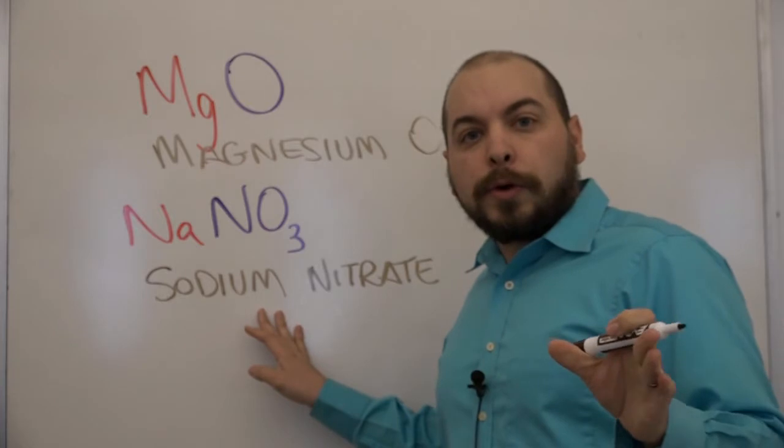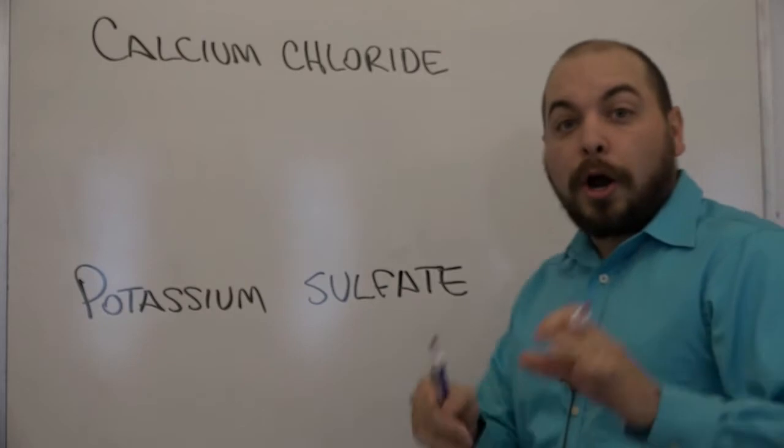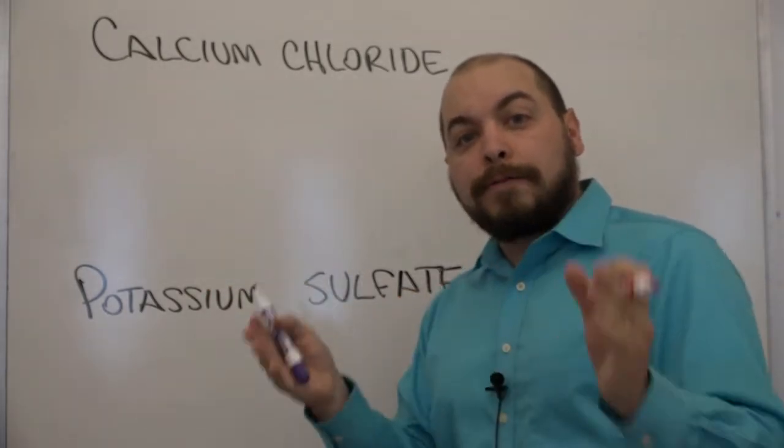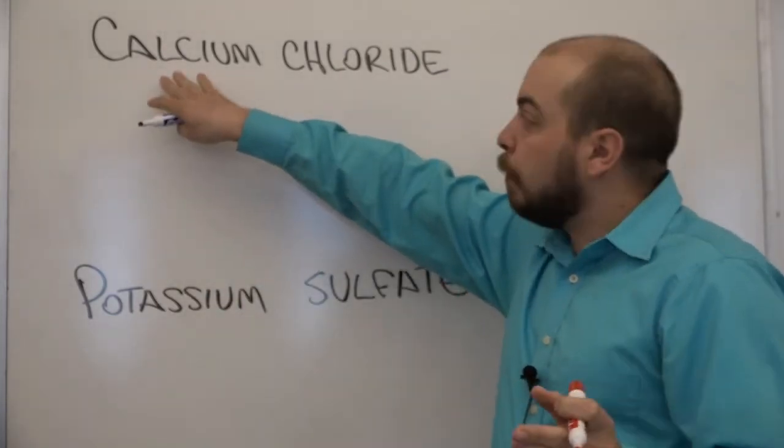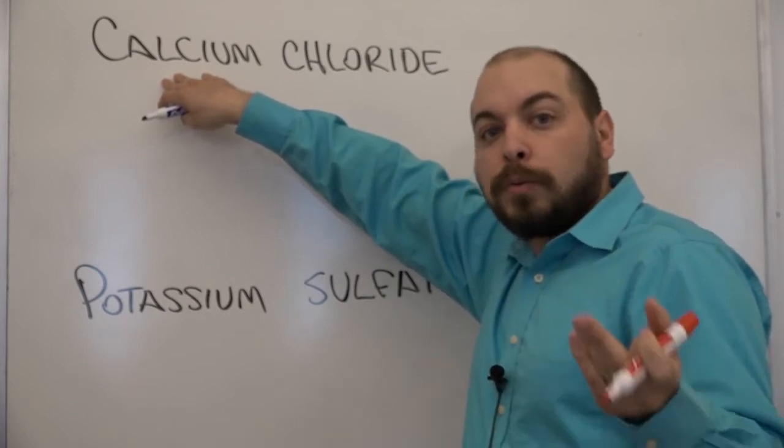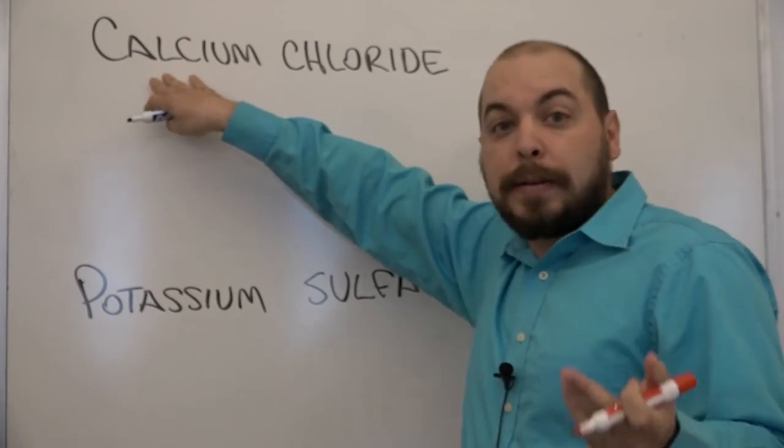Next we're going to look at going from name back to formula. Alright so now let's practice going from name back to formula again for these ions. We're going to start with our cation. Remember when we went from formula to name we started simply by writing the name of the cation.